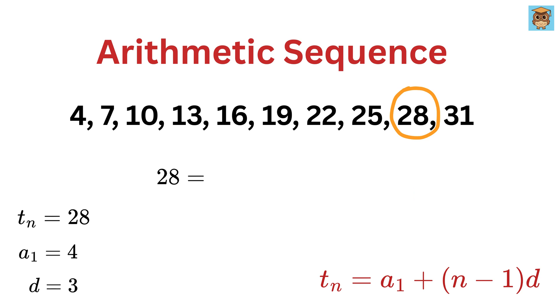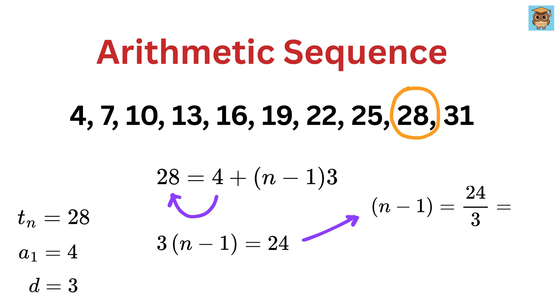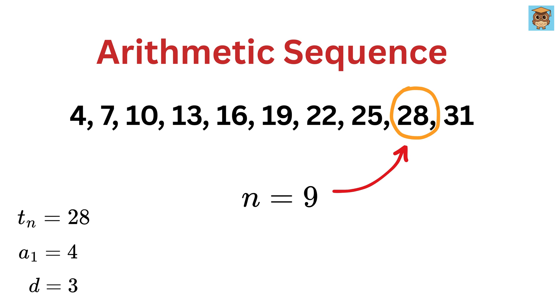So we get 28 equals 4 plus n minus 1 times 3. Take this 4 here to get n minus 1 times 3 equals 28 minus 4 or 24. Now divide by 3 to get n minus 1 equals 24 over 3 or 8. Then take this one here to get n equals 8 plus 1 or 9, and that's it. This means the term 28 is sitting at position 9. See, no need to count one by one. The formula does the job instantly.